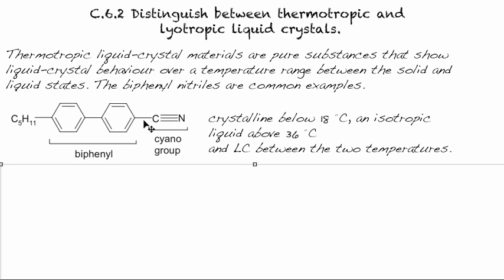For this example molecule, it's crystalline below 18°C and an isotropic liquid (what we traditionally think of as a liquid—disorganized and flowing) above 36°C. Between 18 and 36°C, it exists as a liquid crystal with the structure we looked at in CDOP 6.1.